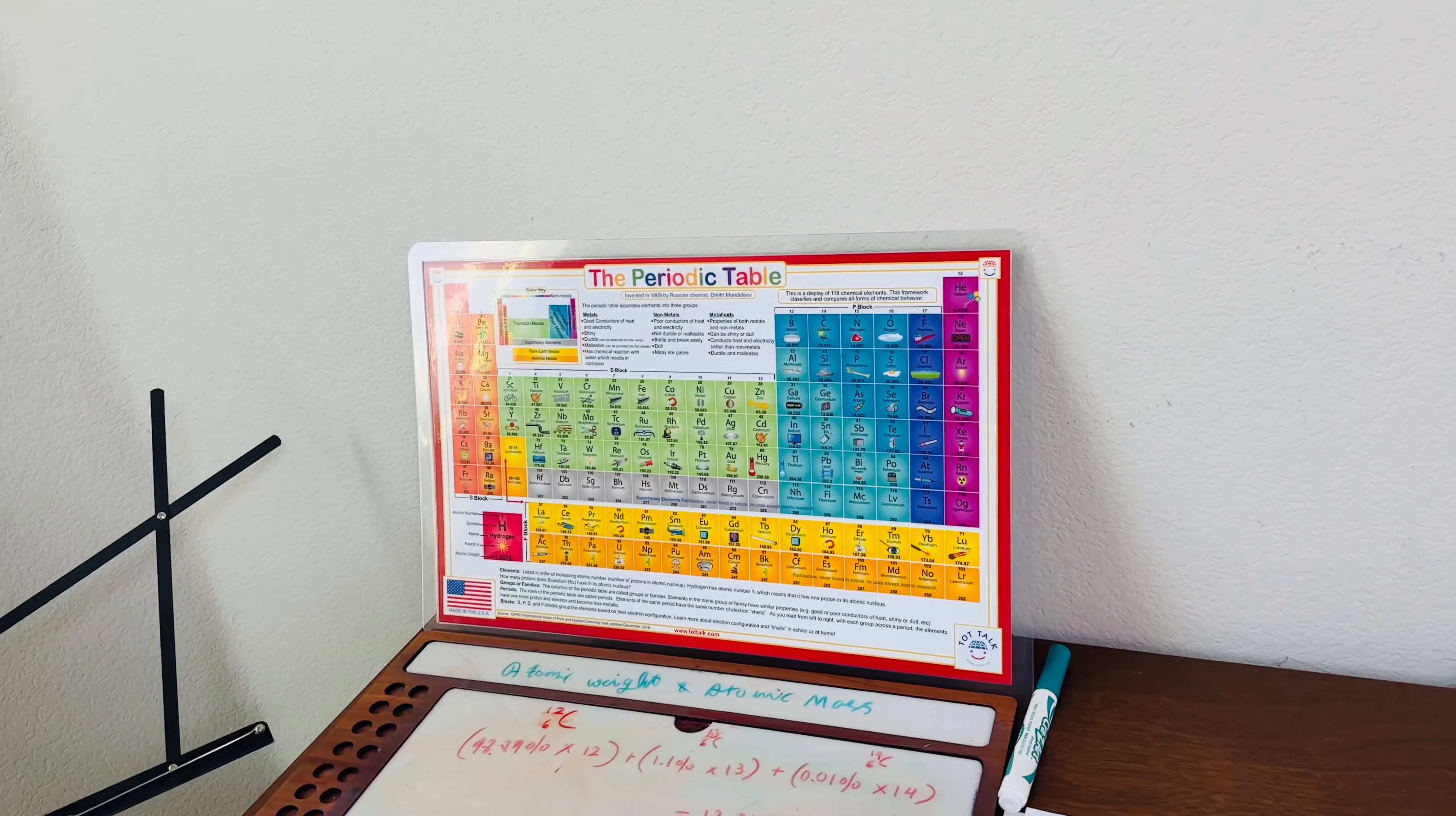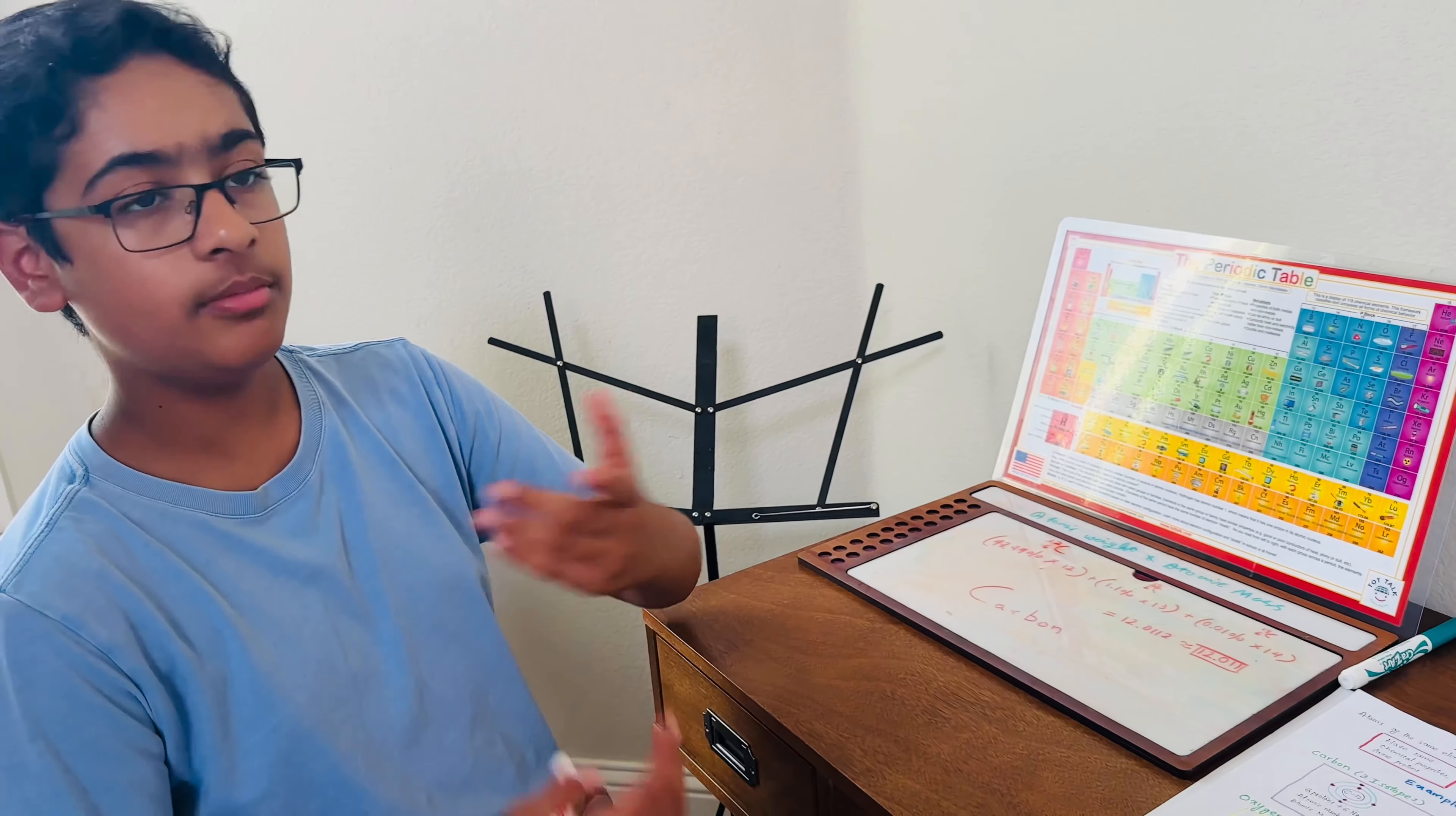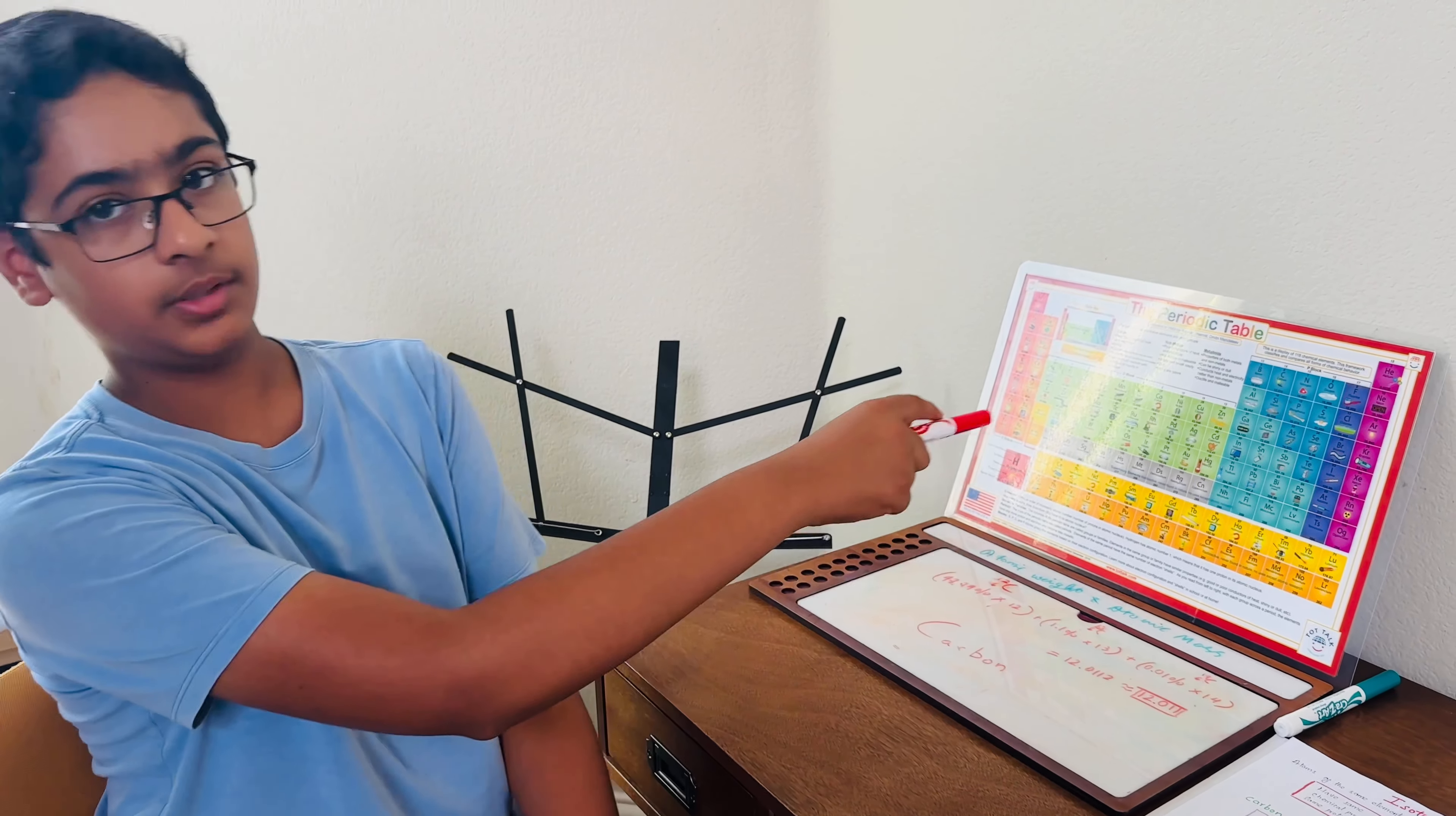So that is the difference between atomic weight and atomic mass. Atomic mass is the sum of protons and neutrons based on the isotope. And the atomic weight is how often a certain isotope is reoccurring in nature. If you multiply that by its mass, you will be able to get its weight, which is found on the periodic table. Thank you very much.